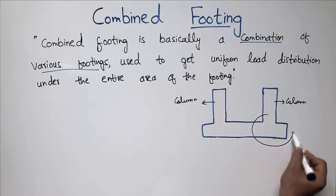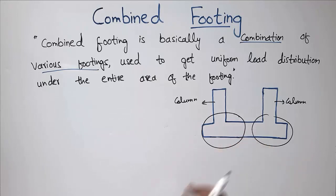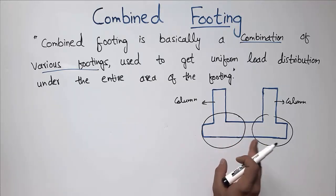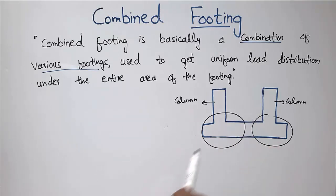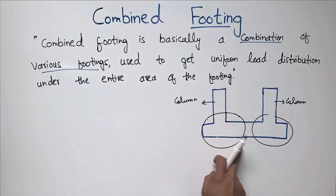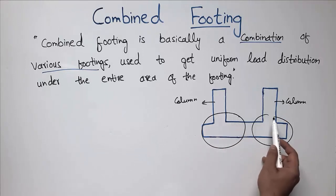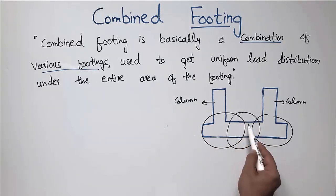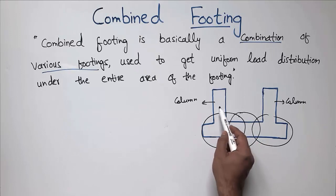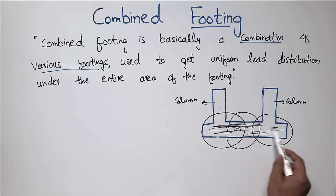You can see here that this column footing is being shared with this column footing without any restriction. This type of footing is known as the combined footing. There is no space between the two footings — both columns share the same footing. That is called the combined footing.